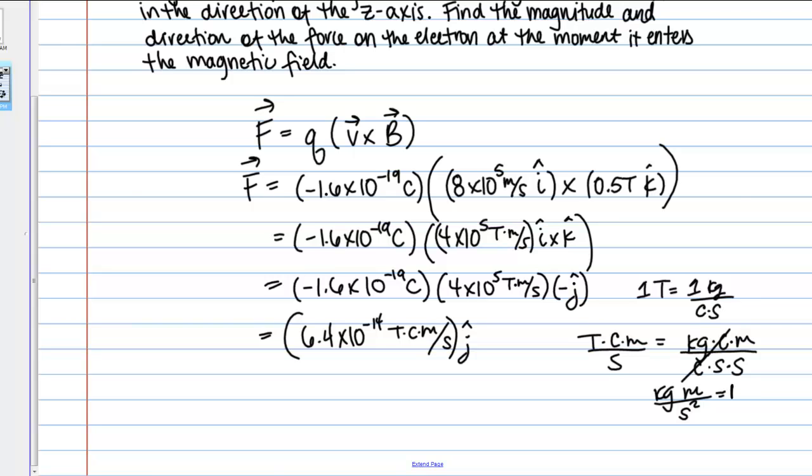And that makes sense because Newton is a measure of force, a unit of force. So 6.4 times 10 to the negative 14 Newtons, that's my magnitude. The force is in the J hat direction. This is the magnitude and direction of the force on the electron at the moment it enters the magnetic field.